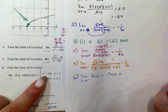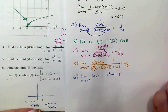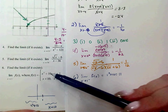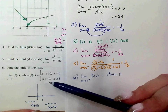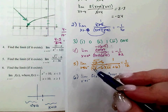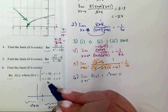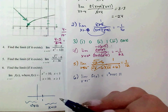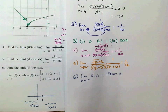A more interesting question would be finding the overall limit as x approaches 1: the left-hand limit is 11, the right-hand limit is 11, so the limit exists and equals 11. The function is also defined at 1 to be 11, so since the limit equals the function value, the function is continuous.